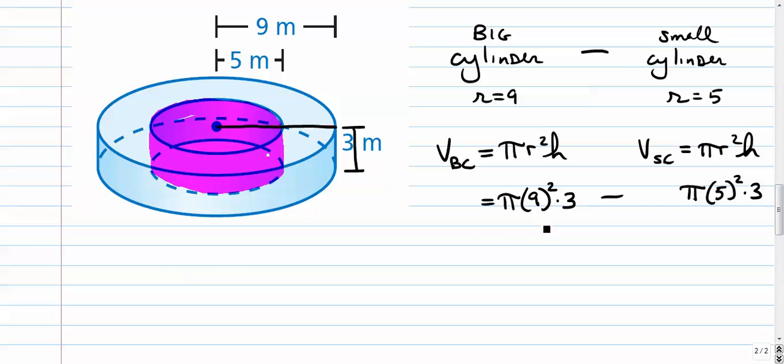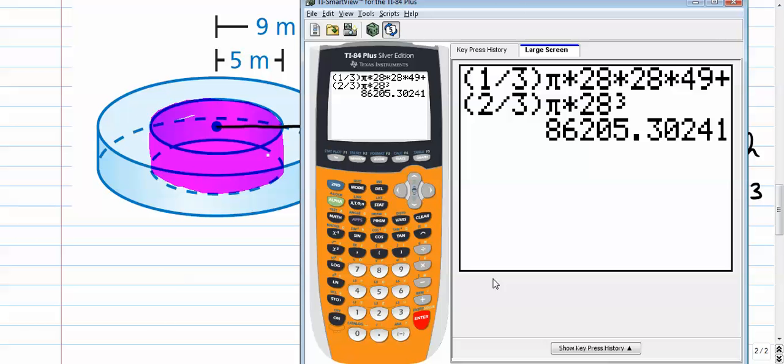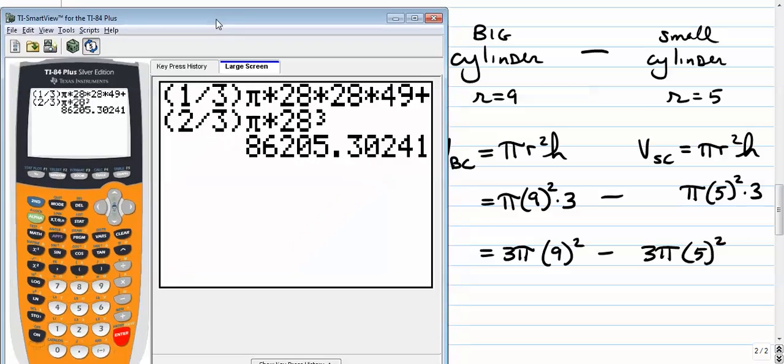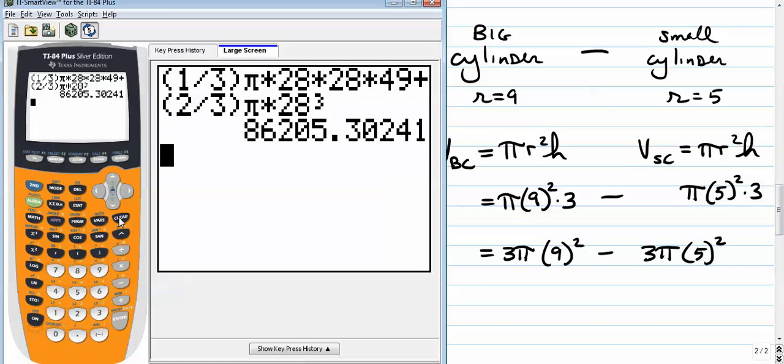Before you go to your calculators, you can actually simplify some of this. If you put 3 pi in front. And you put 3 pi in front. If you wanted to, you can factor out a 3 pi. If you wanted to. But let's not do that. Let's not overcomplicate the matter.